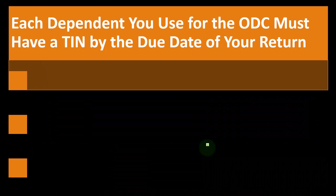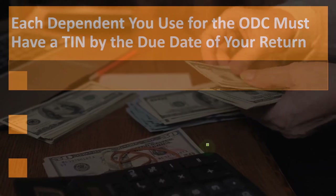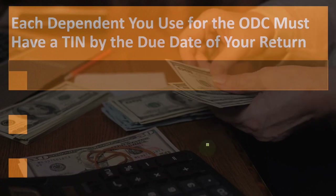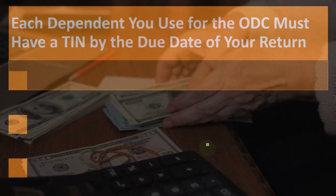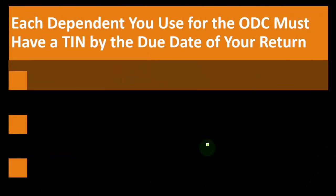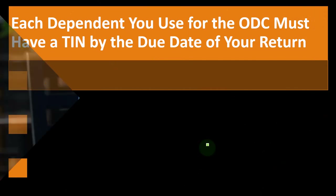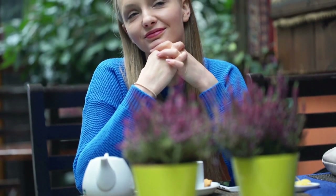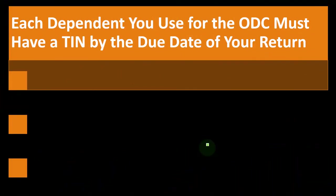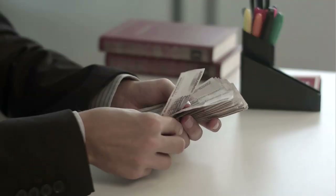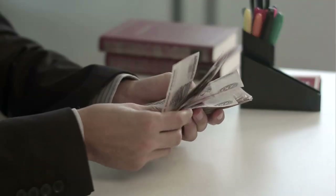Each dependent used for the ODC (Other Dependent Credit) must have a TIN by the due date of your return. When thinking about credits, the general strategy is: could you get the Child Tax Credit? If not, could you get the Other Dependent Credit? These two credits are linked because they're basically attached to someone who might qualify as a dependent — the child tax credit would be the biggest benefit, and if they don't qualify for that, you may be able to get the Other Dependent Credit.